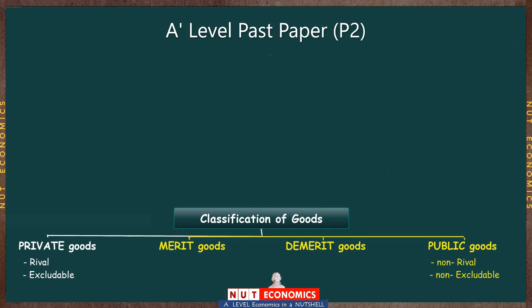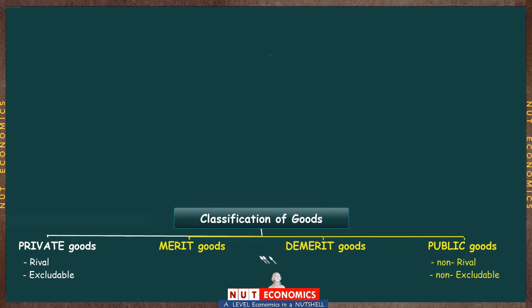But to get to the point where they become easy for you, all you need to do is build an understanding of these different types of goods in connection with whatever you have already learned previously in this course. You need to keep both things connected: classification of goods and the overall story of what we have been doing so far.